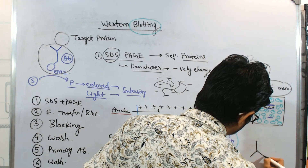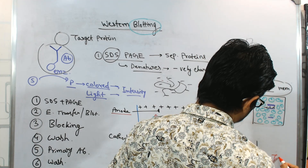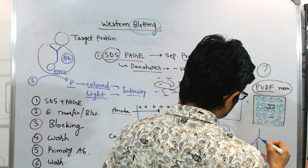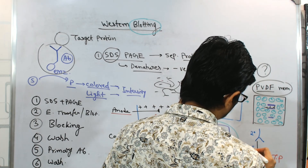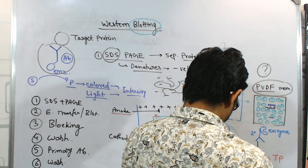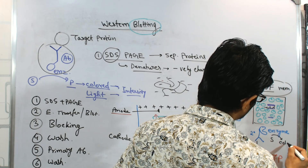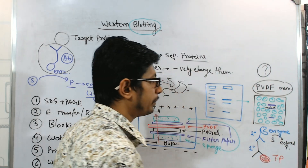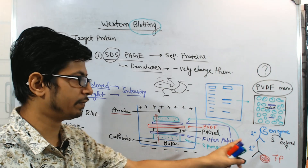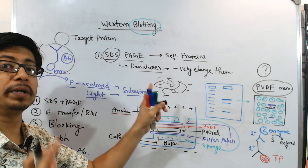The primary antibody binds with the target protein. Then the secondary antibody is added — it binds to the primary antibody. The secondary antibody is linked with an enzyme that can convert a colorless substrate into a colored product. We can easily see the presence and intensity of the color, which gives us not only a qualitative analysis but also a quantitative idea about the amount of protein present in the actual cell.